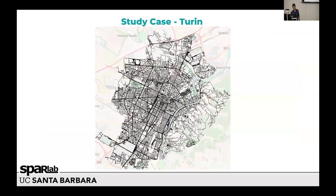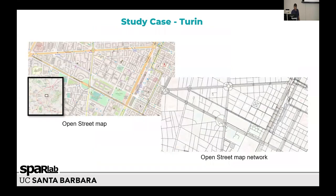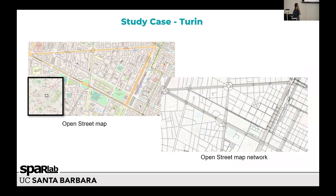For this example, I'm working with a case study of Turin — and specifically about this area in OpenStreetMap. We are using the OSMnx package, which is an amazing package for everyone that works with Python and OpenStreetMap. And with this example, I will show you how we simplified the street.